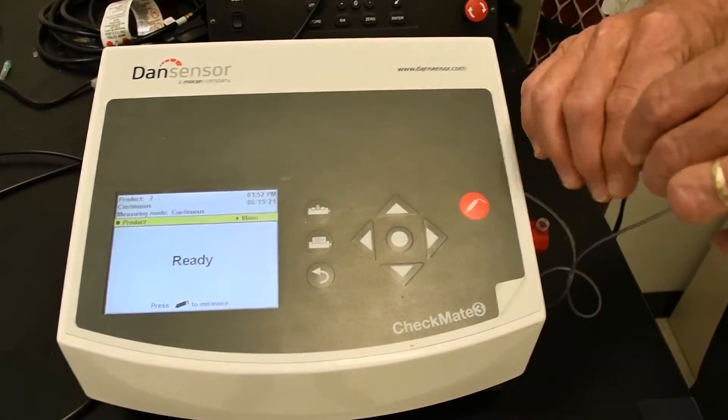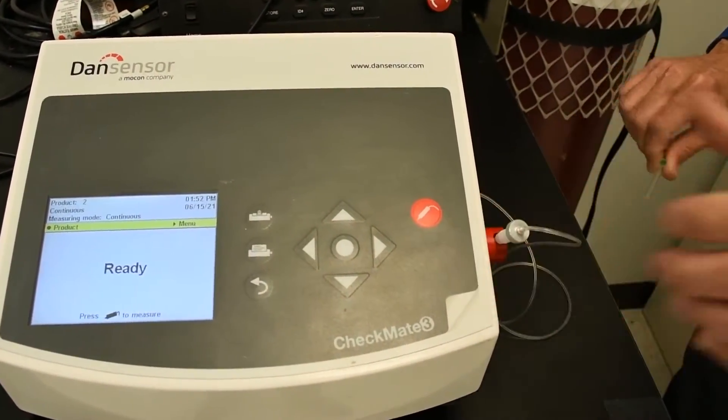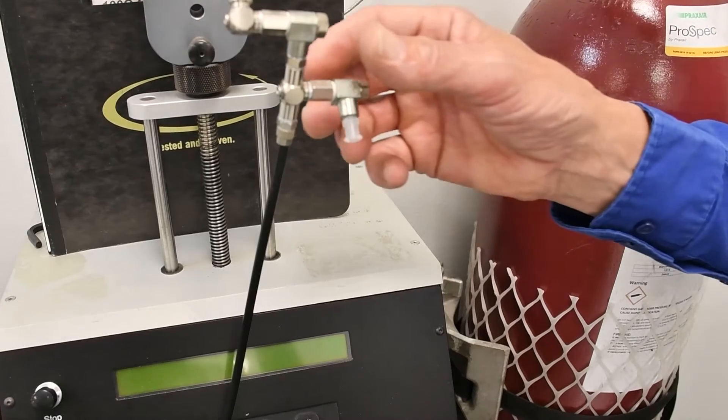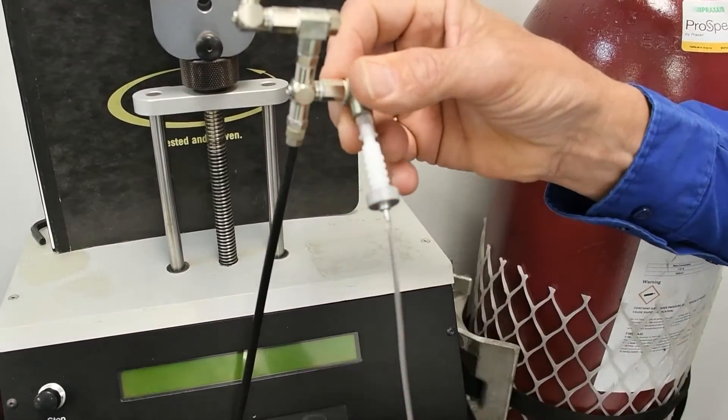Remove the needle from the pen of the sampling kit on the Checkmate 3. Now I'll demonstrate the verification process for the Checkmate 3. Connect the measurement hose from the instrument to the pressure relief kit.